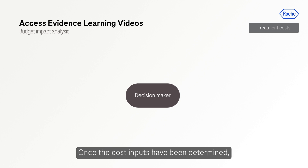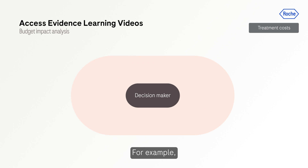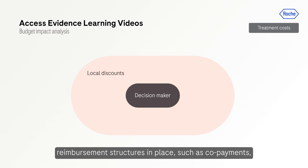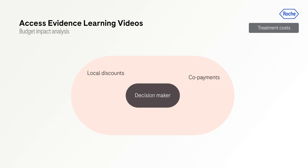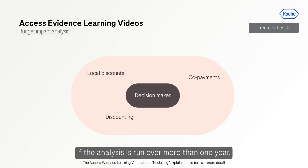Once the cost inputs have been determined, the audience's local environment should be considered. For example, there may be local discounts or reimbursement structures in place, such as copayments, that need to be taken into account. Also, discounting may need to be applied if the analysis is run over more than one year.